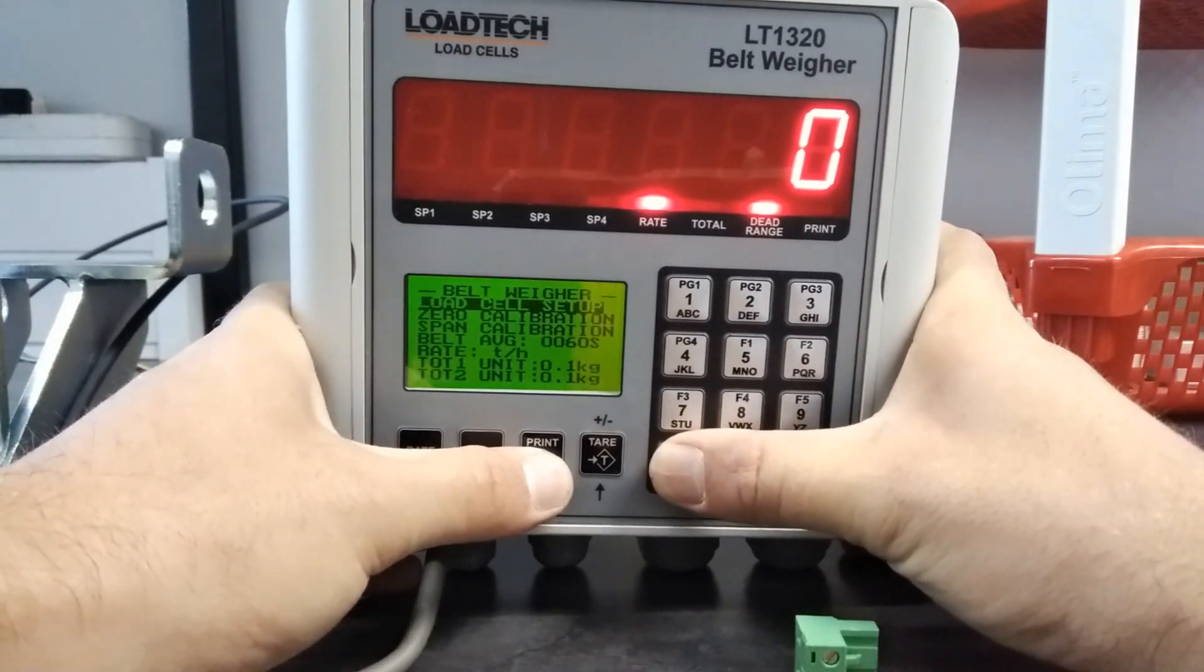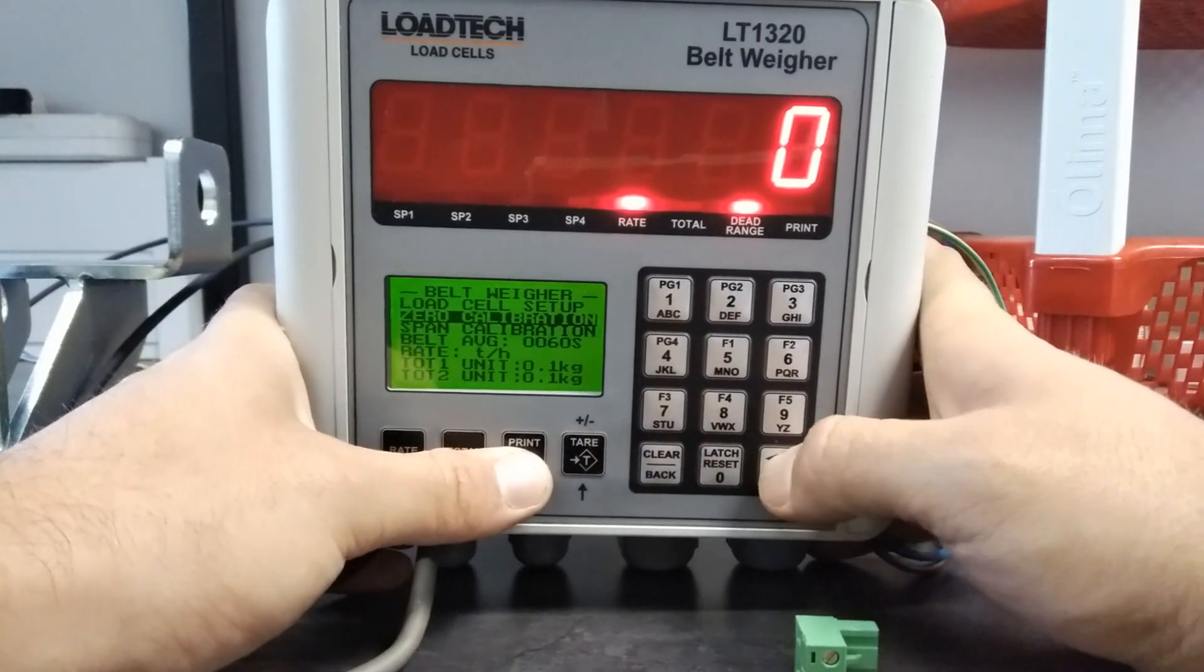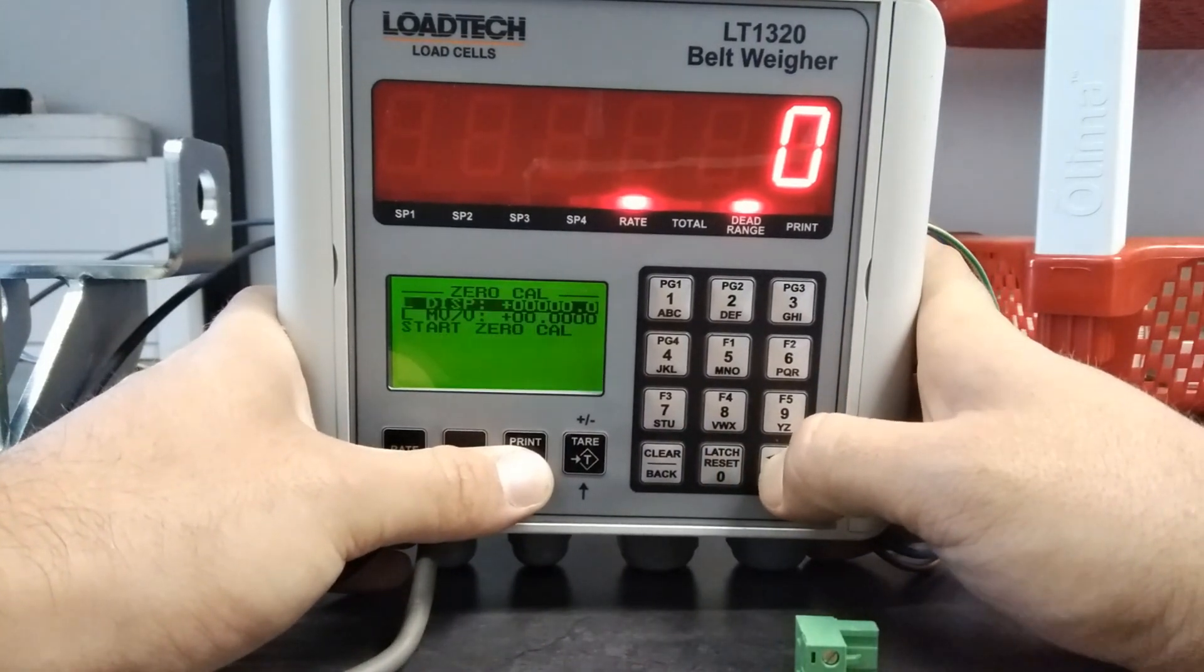Next go to zero calibration. Set your low display, normally this will be zero. Set your low millivolt per volt, normally this will also be zero.